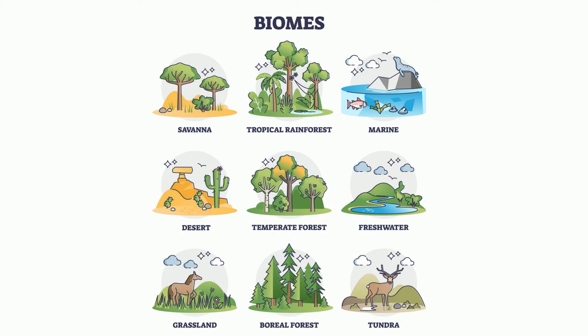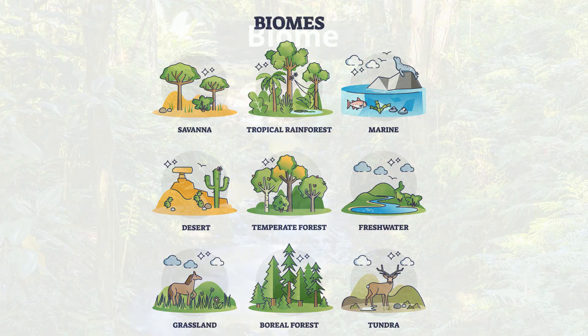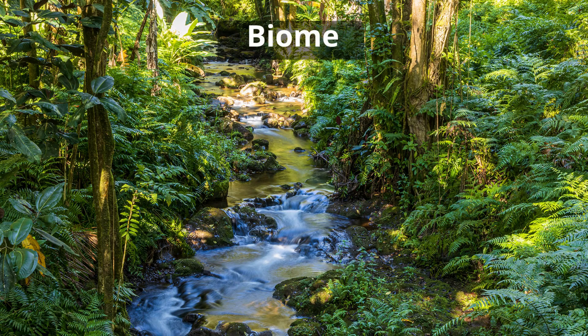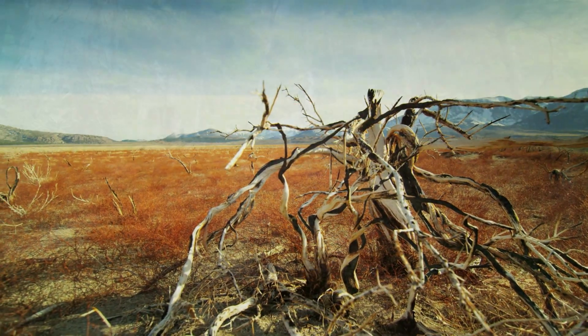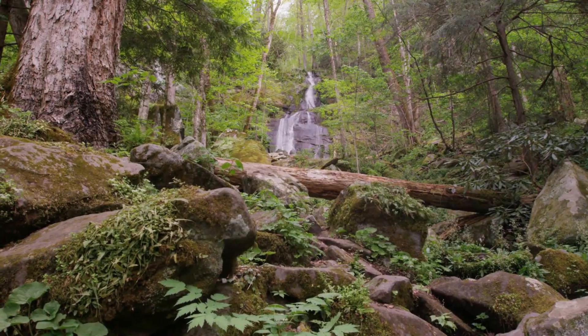A biome is a large group of ecosystems that share the same climate and have similar plants and animals. Common examples include the rainforest, desert, or a deciduous forest.